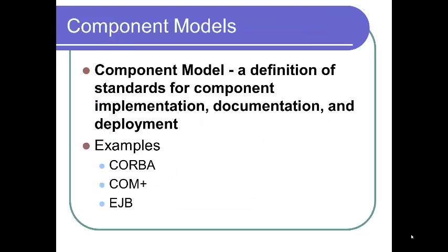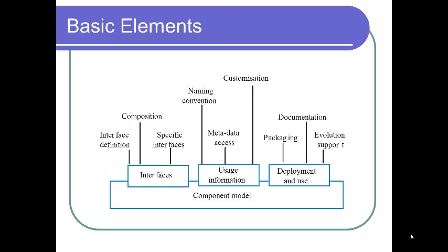Component models are a definition of standards for component implementation, documentation, and deployment. Examples include CORBA, EJB (Enterprise Java Beans), and COM+, the component object model from Microsoft. Basic elements of a component model are interfaces, usage information, deployment, and use — with sub-elements such as composition, customization, and documentation. You should know what interface definition language you're using, how to package the components, naming conventions to ensure unique names, and when replacement of a component is allowed.